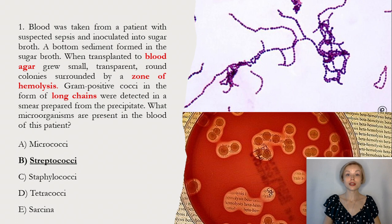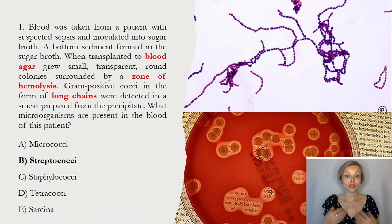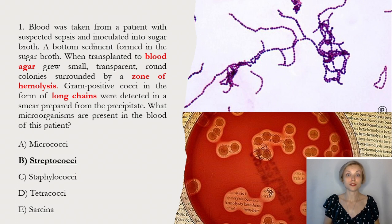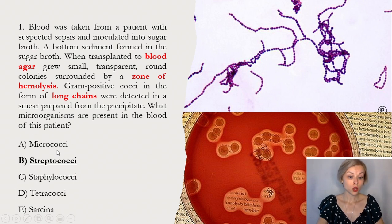The correct answer is B, streptococci. We use blood agar to study the hemolytic activity of bacteria, especially streptococci and staphylococci, because some of these bacteria have hemolysis. Therefore you can exclude answers A micrococci, D tetracocci, and E sarcina from the list.